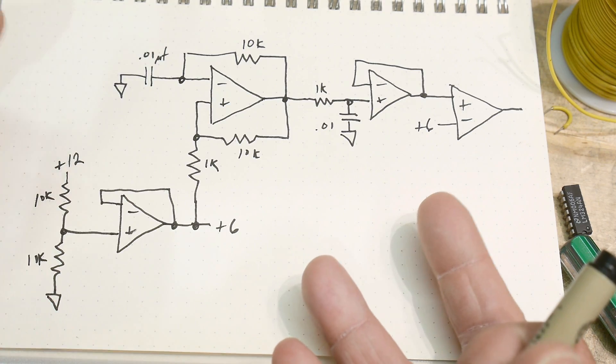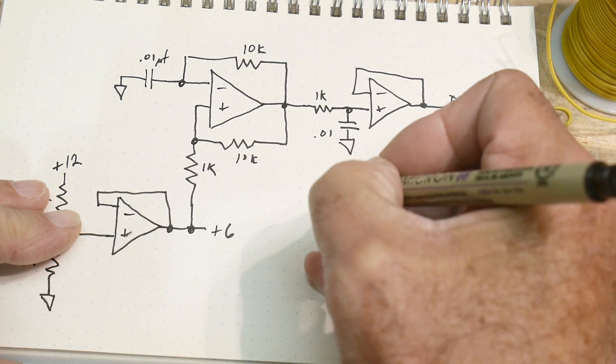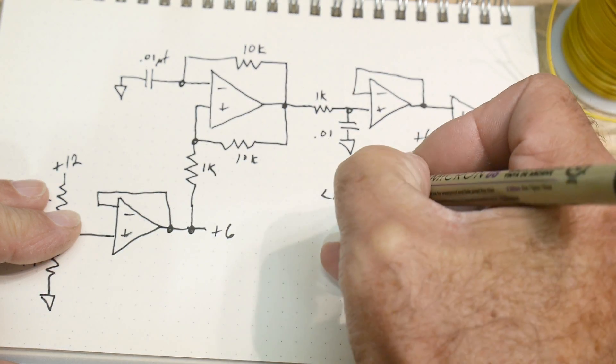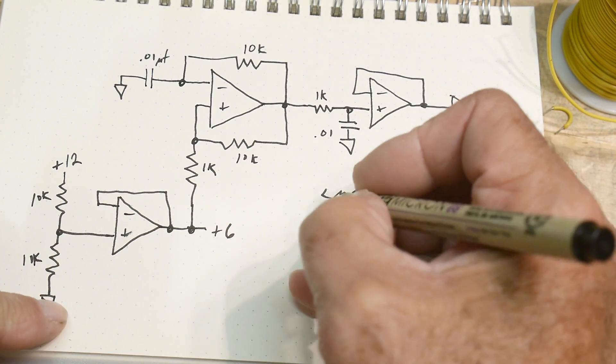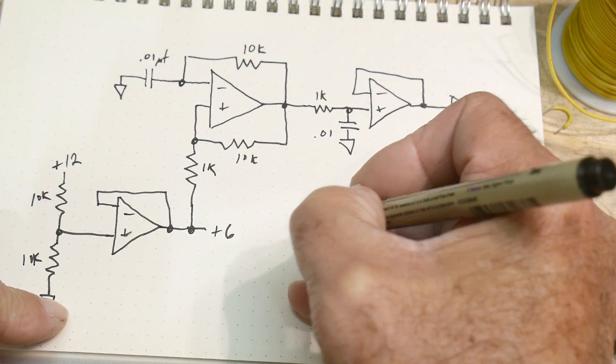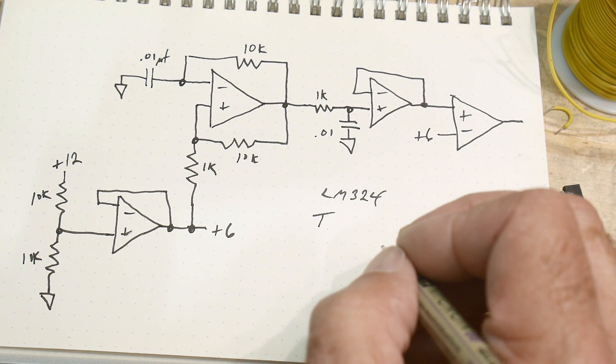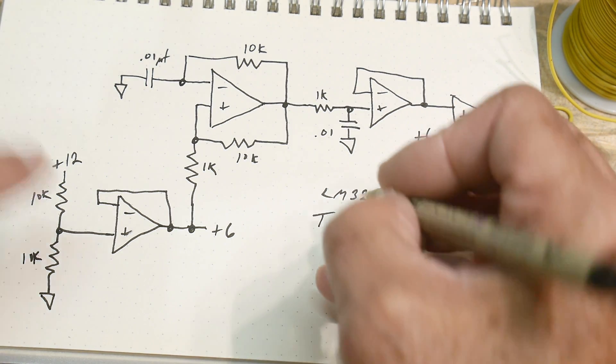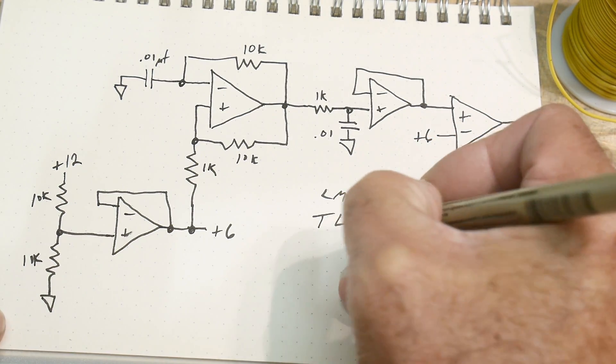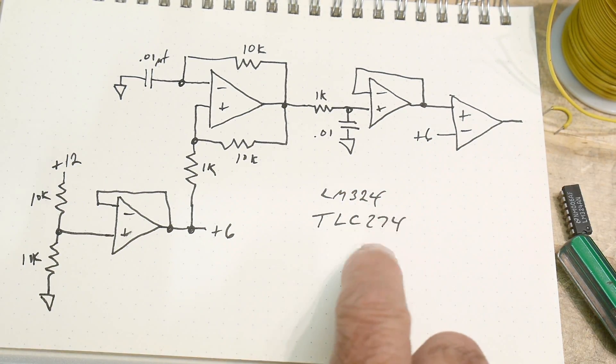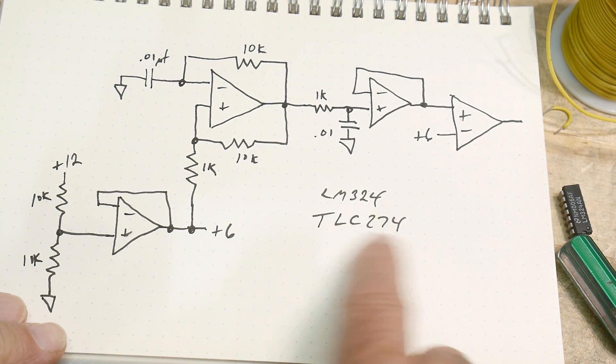Now I'm going to first show it to you using a different op amp. We're talking about an LM324, but I want to talk about another op amp today that is my favorite. It's probably still old school in a lot of people's heads, but that is a TLC274.